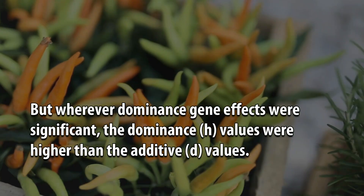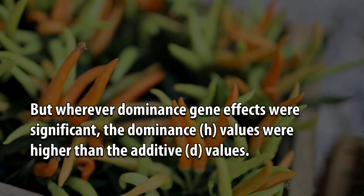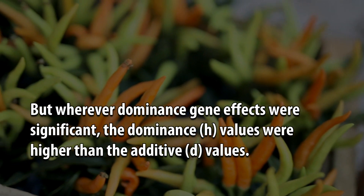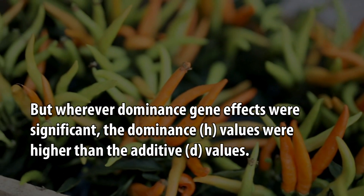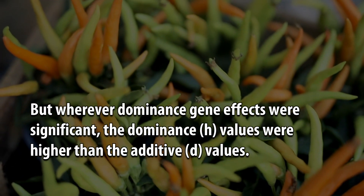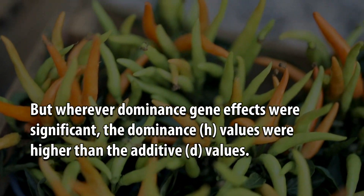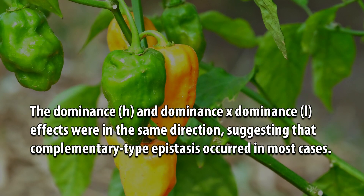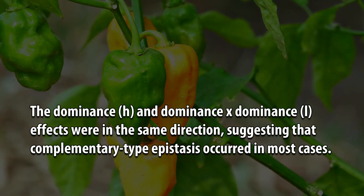Wherever dominance gene effects were significant, the dominance (H) values were higher than the additive (D) values. The dominance (H) and dominance X dominance (L) effects were in the same direction, suggesting that complementary type epistasis occurred in most cases.